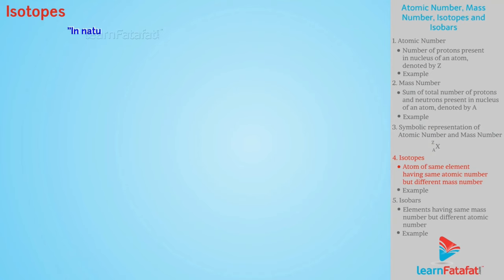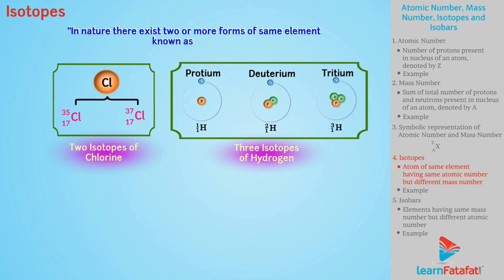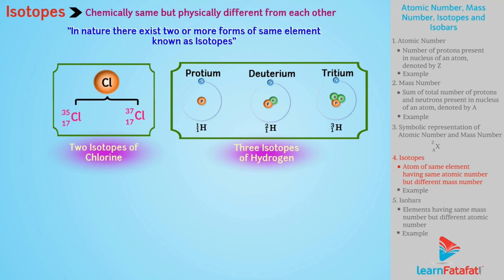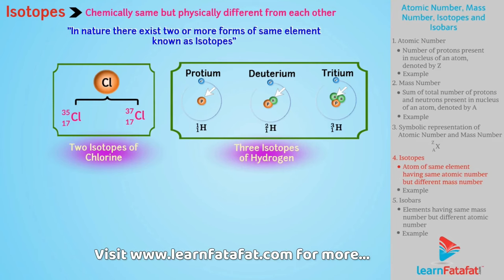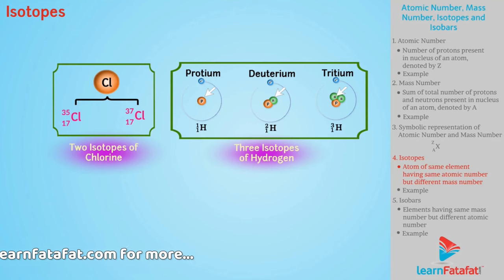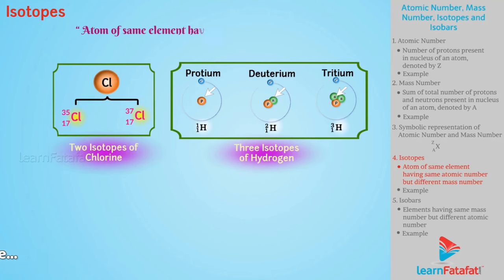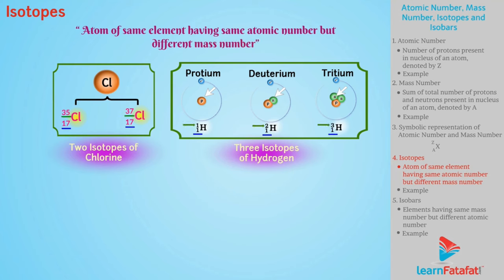Isotopes: In nature, there exist two or more forms of the same element known as isotopes. Isotopes are chemically the same but physically different from each other. This difference occurs due to a change in the number of neutrons present in an atom of that element. Hence, isotopes can be defined as atoms of the same element having the same atomic number but different mass number. For example, carbon has isotopes C-12 and C-14.